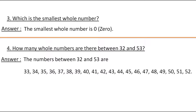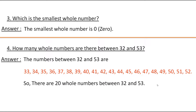Now let's count these numbers. Counting them: 1, 2, 3, 4, 5, 6, 7, 8, 9, 10, 11, 12, 13, 14, 15, 16, 17, 18, 19, and 20. Therefore, there are 20 whole numbers between 32 and 53.